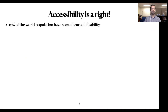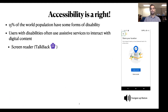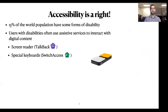15% of the world population have some forms of disability. Software should be accessible, especially right now when apps are essential parts of our daily lives. Users with disabilities use assistive services to interact with software. For example, blind users use a screen reader such as TalkBack in Android. A screen reader announces the textual description of elements on the screen and lets users navigate through elements by special gestures. Also, users with motor impairments use special keyboards like this one through a service called Switch Access in Android.